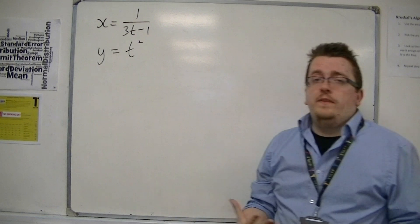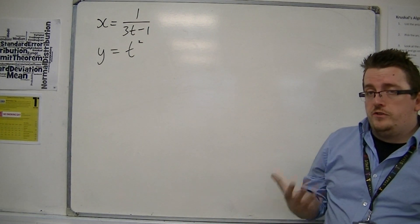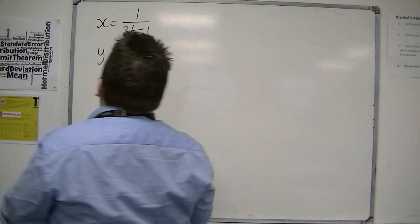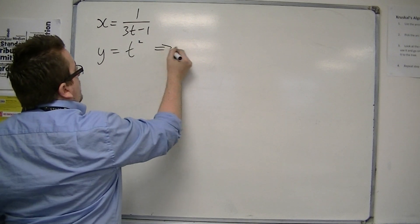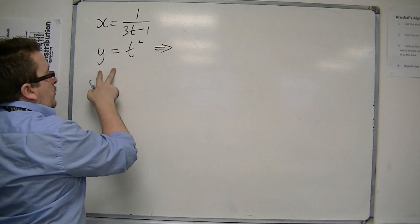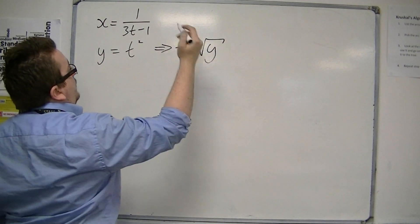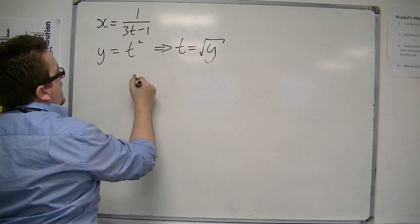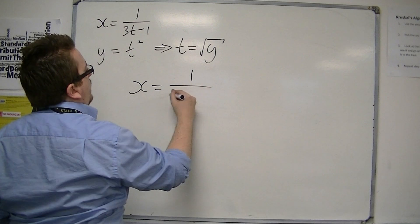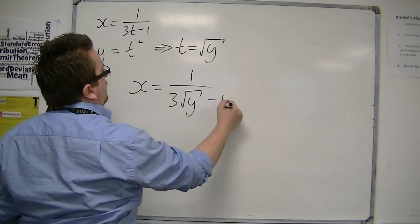One thing that I see a lot of students trying to do is this, where t squared equals y is rearranged to get t equals root y, and then I substitute that directly into here, and I get x equals 1 over 3 root y minus 1.